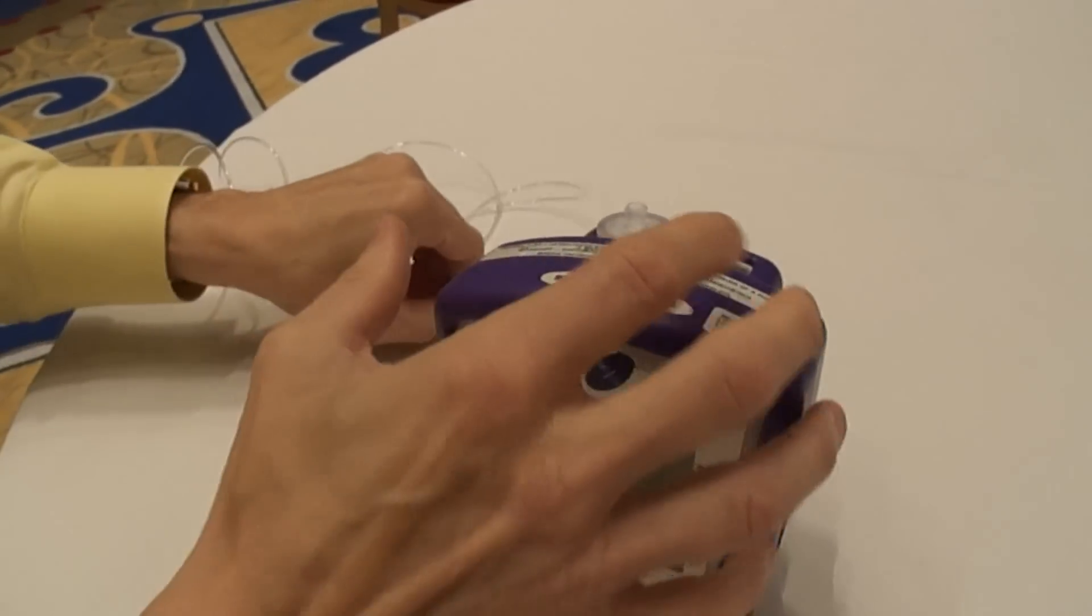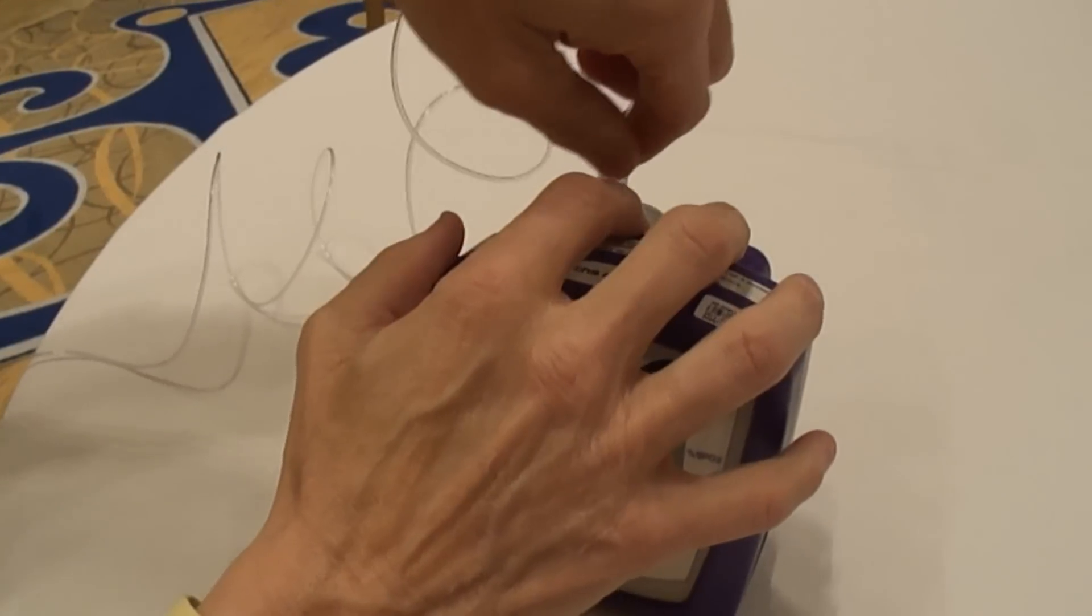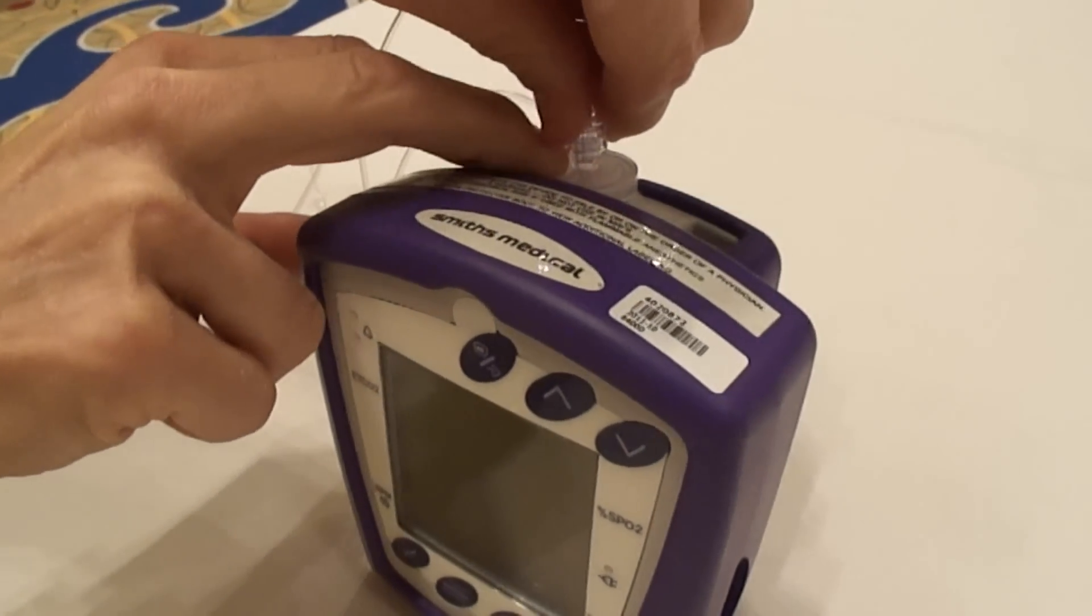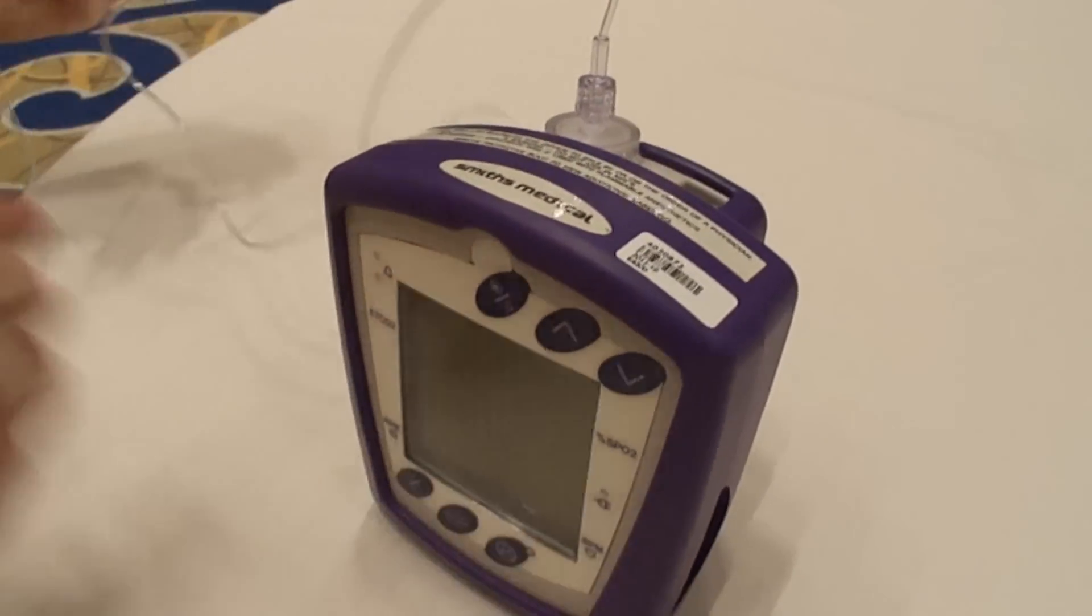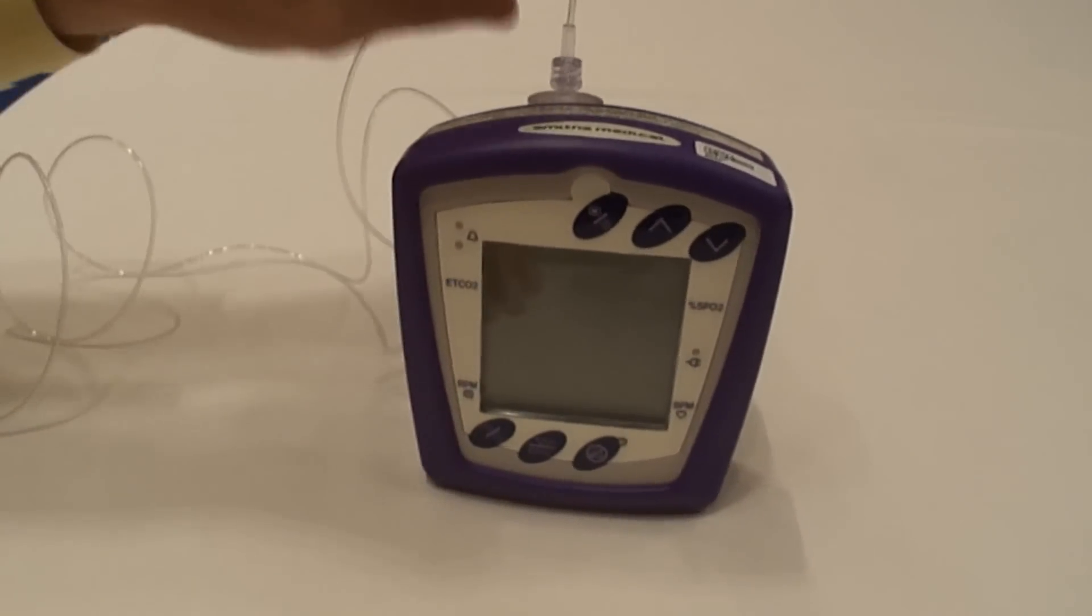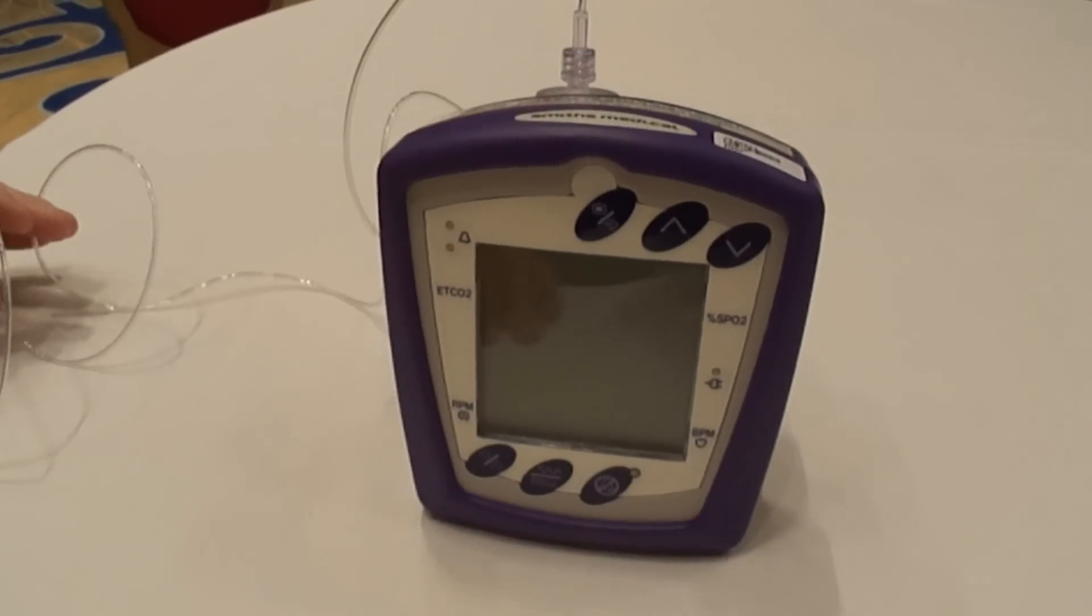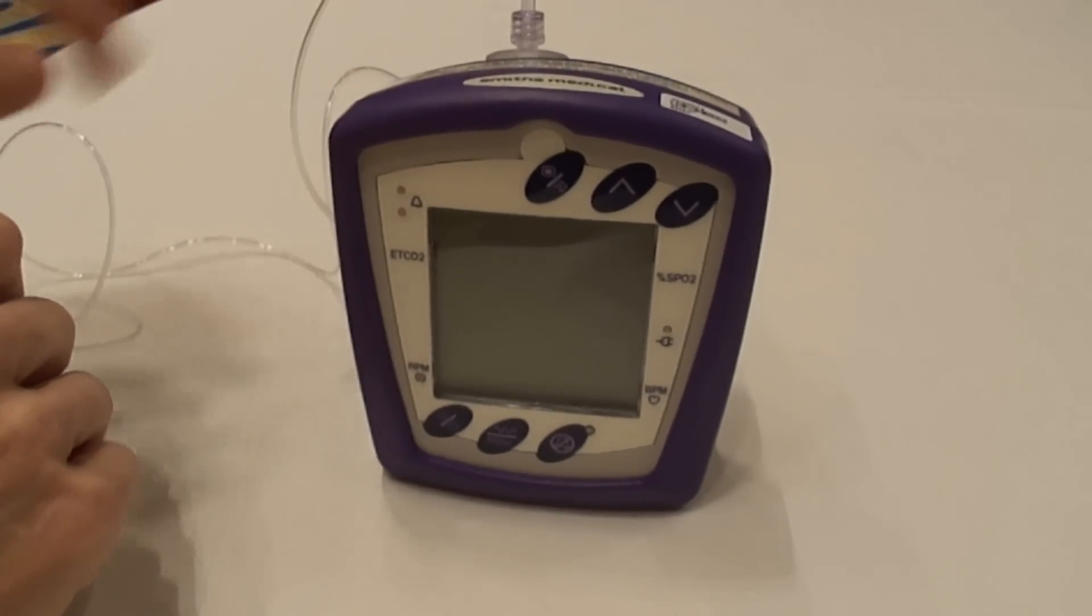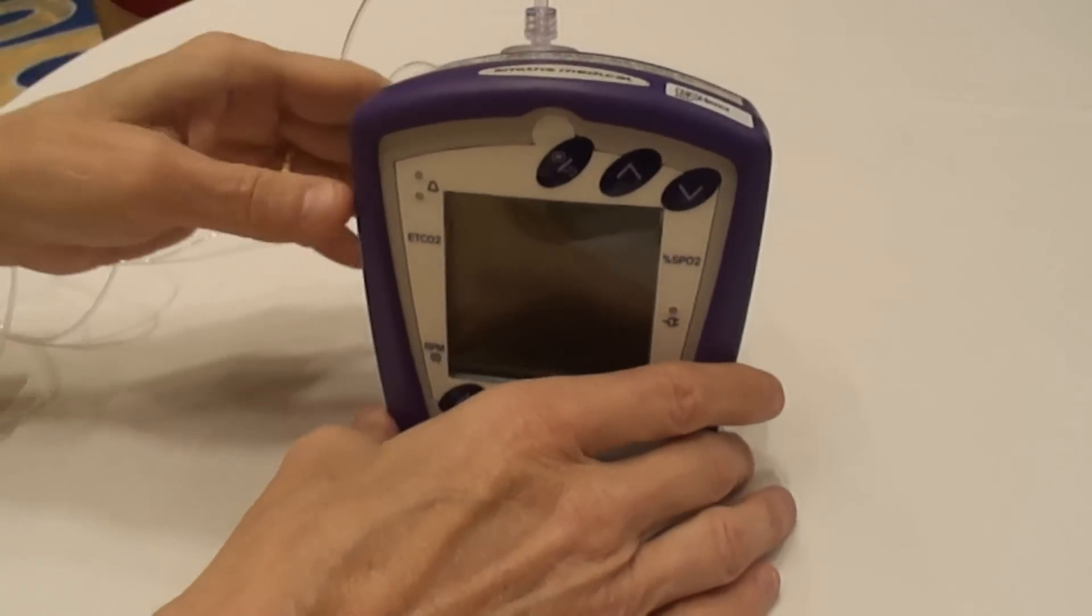Then you're going to have your end-tidal CO2 tubing, or nasal cannula, as we refer to it. Basically, it just locks right onto the back. You can use just the nasal cannula sampling line for CO2, or you can use a divided nasal cannula, which would allow you to administer oxygen and monitor the end-tidal CO2.